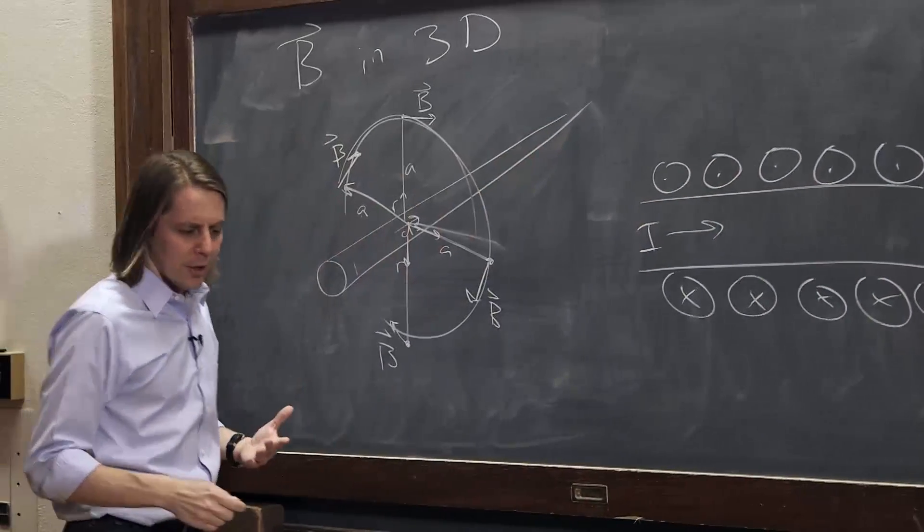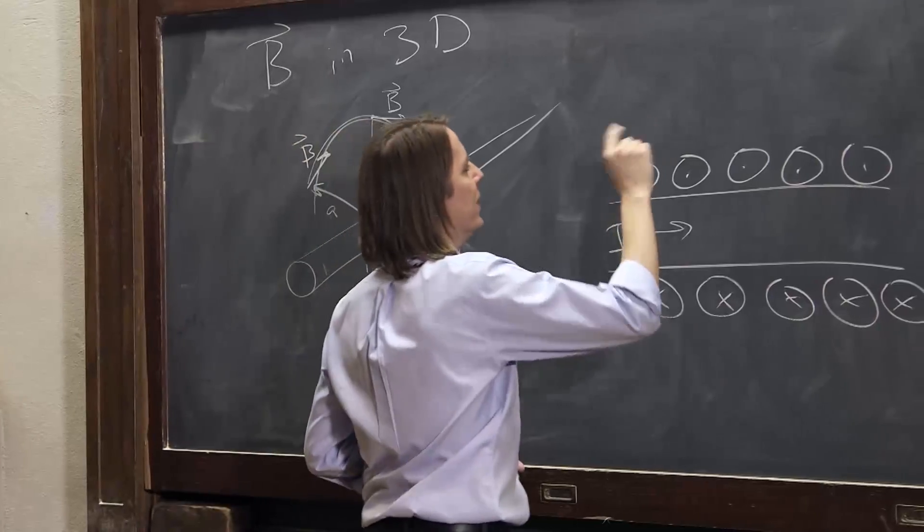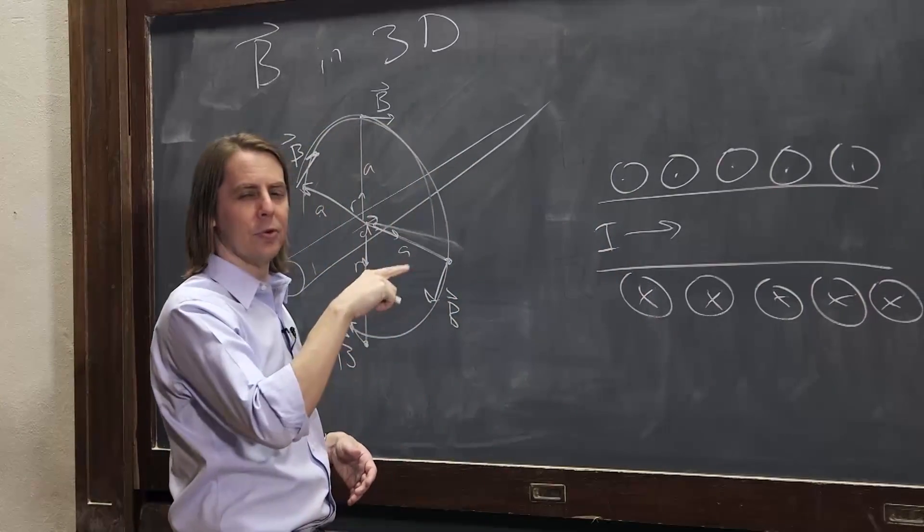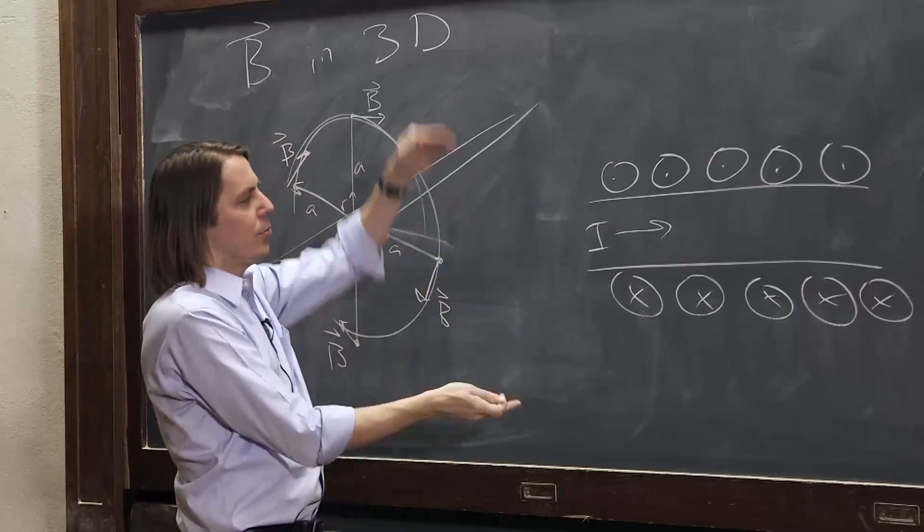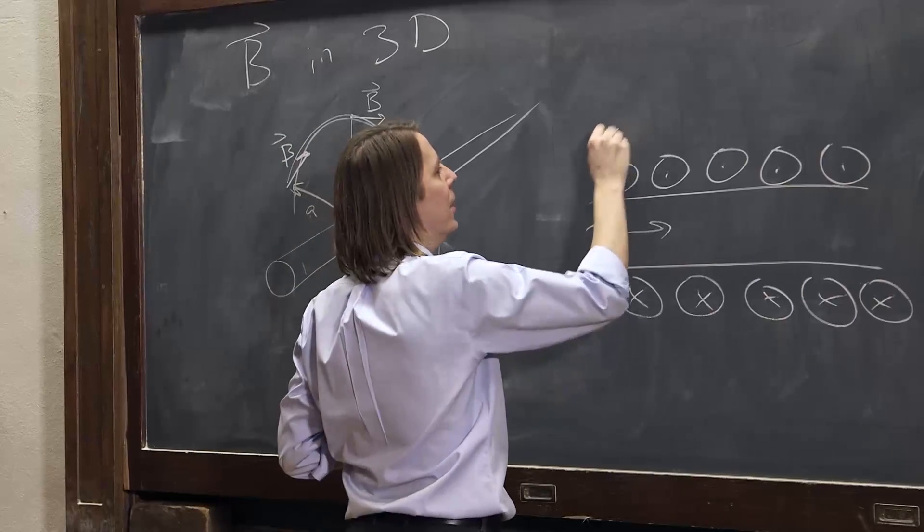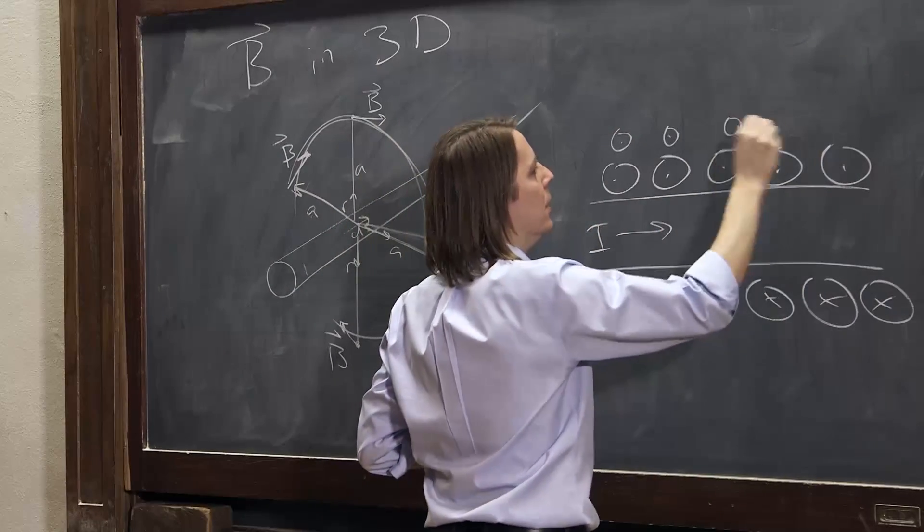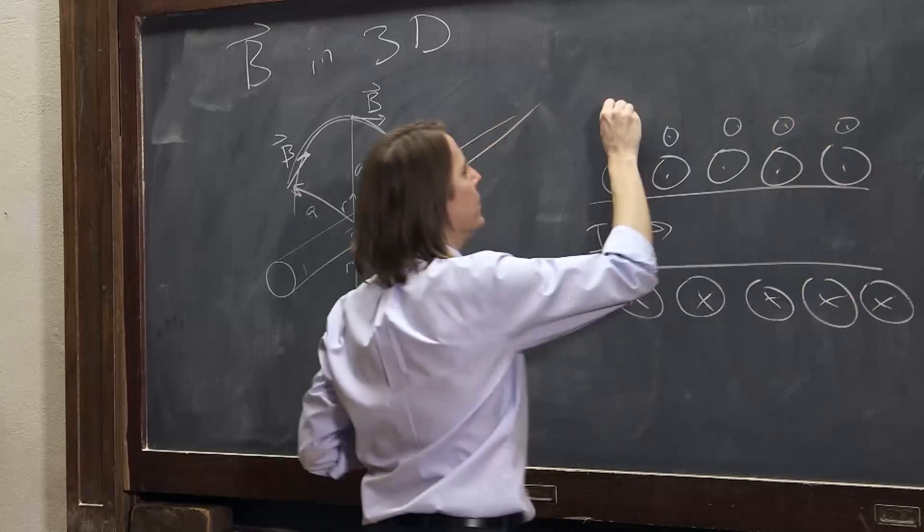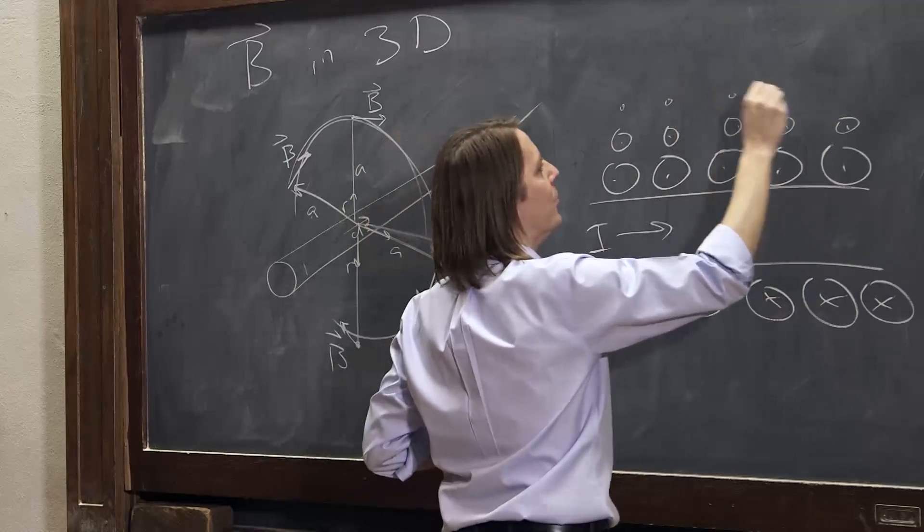But now, with our new formula, we know that it gets weaker. It goes as 1 over R: mu naught I over 2 pi A. Really, the A is the radius, so it's mu naught I over 2 pi R. So as you get farther away, the magnitude will get smaller, which I'll represent with slightly smaller-looking vectors.